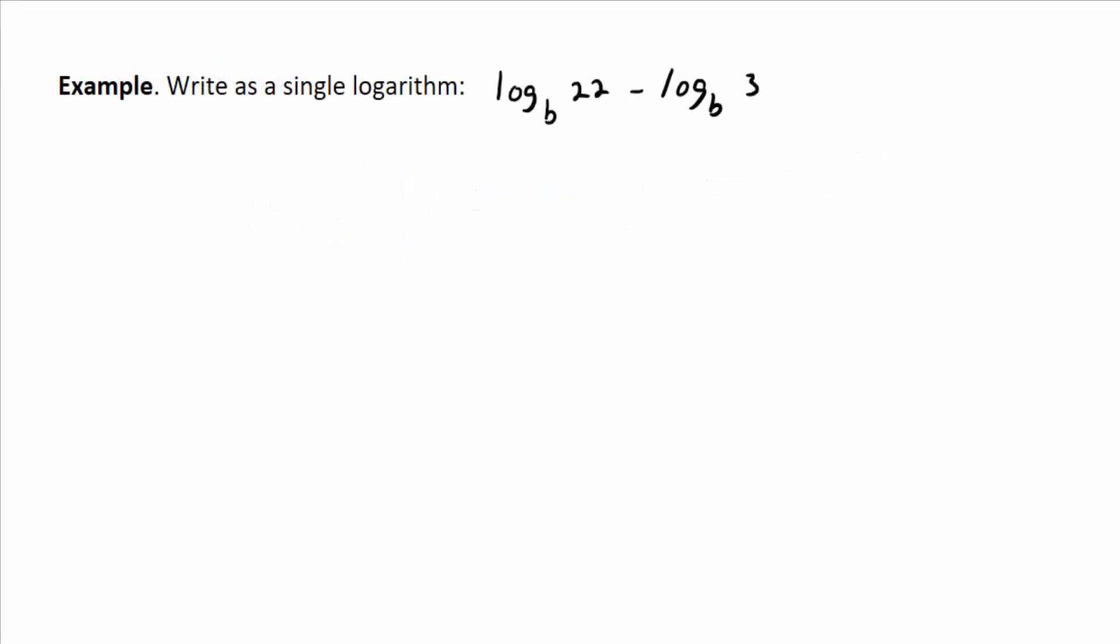Let's see if we can apply that quotient rule once. Again, it just says log base A of M divided by N is equal to log base A of M minus log base A of N. So that's the rule. How does it tell us to combine log base B of 22 minus log base B of 3 into a single logarithm?